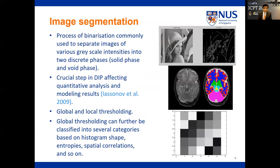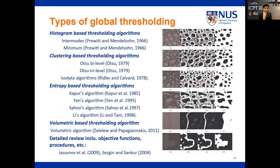The flattened zone between the two peaks represents the partial volume effect, since the voxel size is often larger than the individual components and some voxels may contain a mixture of different phases. The crucial step in the image processing algorithm is image segmentation — the process of binarization used to divide images of different grayscale intensities into two or three different phases. It can be classified into two types: global and local thresholding, and global thresholding can further be classified into histogram, clustering, entropy, and volumetric methods.